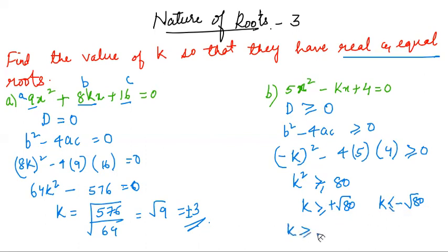So you can further simplify 80 as 4 root 5. So k is greater than or equal to 4 root 5 or k is less than or equal to negative 4 root 5.